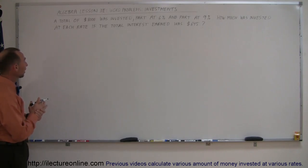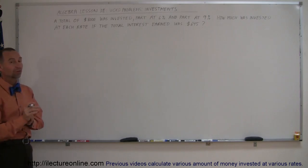The example here says a total of $8,000 was invested, part at 6% and the other part at 9%. How much was invested at each rate if the total interest earned was $645?